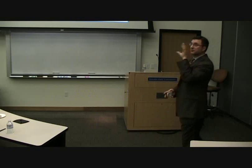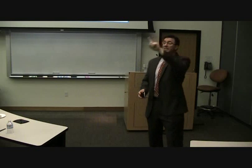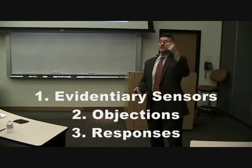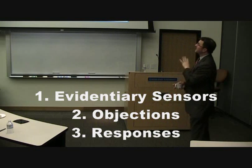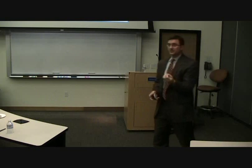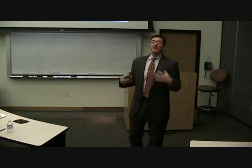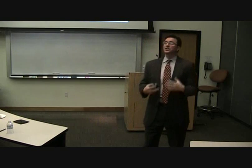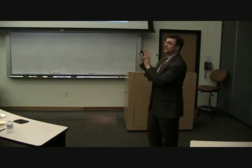I'm going to talk about this in terms of three different columns, three different stages: evidentiary sensors, objections, and then the responses. This goes along with the handout we've given you. Think about it this way — the opponent, the one who is not asking the questions at the time, the one who's not presenting evidence, the one who's probably sitting down just listening to the proponent put something on, has sort of two stages to this.